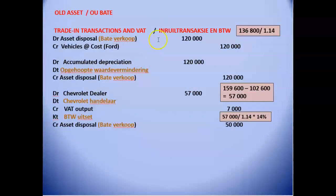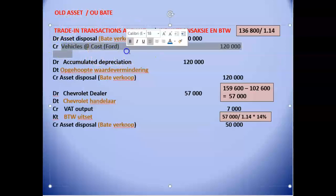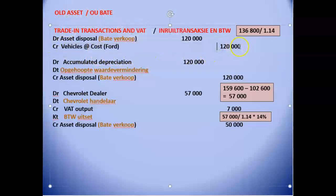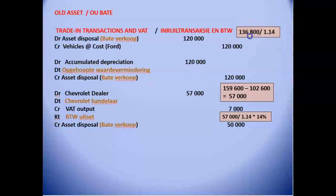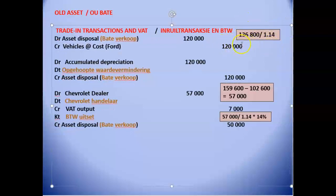We have to remove that asset out of our books. We credit the vehicles account at cost price, and remember the cost price is the VAT exclusive price. The VAT exclusive price is $136,800 divided by 1.14, which equals $120,000. So we credit the asset account with $120,000 and debit the asset disposal account with $120,000.